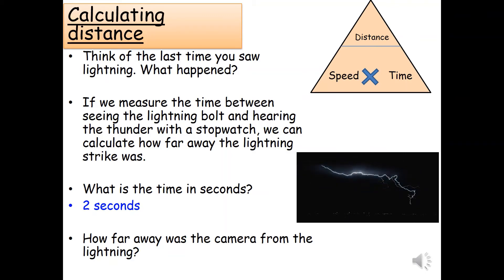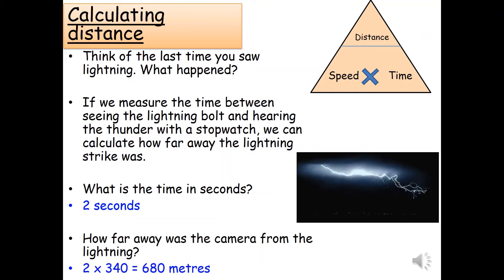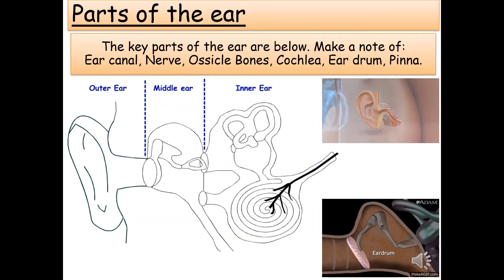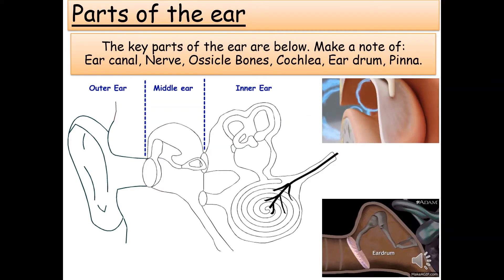Let's say the time between seeing and hearing the lightning is two seconds. Using the formula distance = speed × time, a lightning bolt heard two seconds after the flash, with sound travelling at 340 metres per second, gives us a distance of 680 metres.